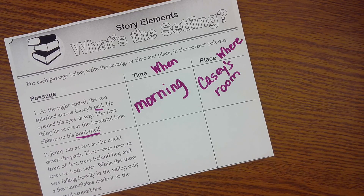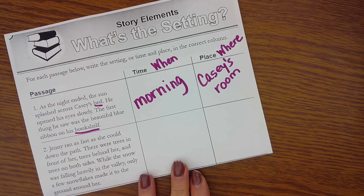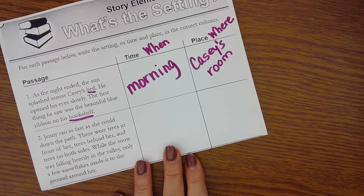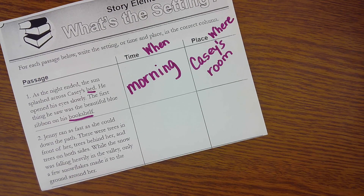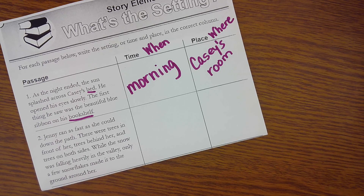Let's go to the second passage. Remember, you're listening for when the story takes place and where the story takes place. Jenny ran as fast as she could down the path. There were trees in front of her, trees behind her, and trees on both sides. While the snow was falling heavily in the valley, only a few snowflakes made it to the ground around her.